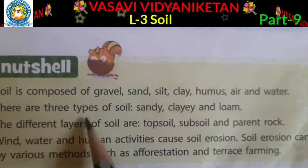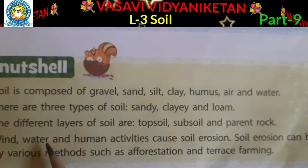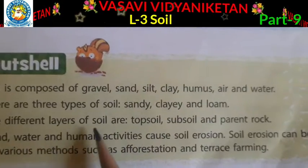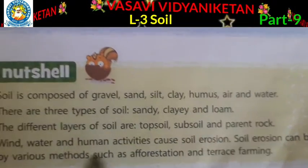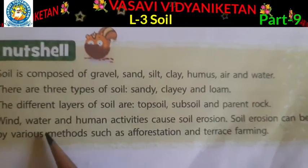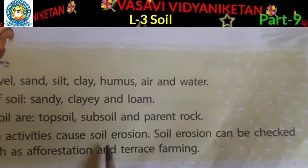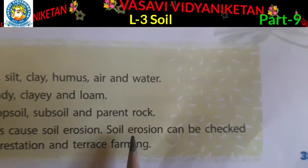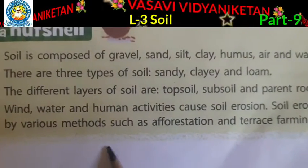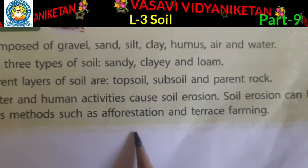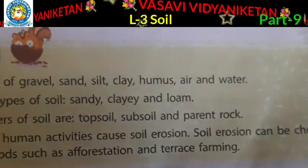There are three types of soil: sandy, clay and loam. The different layers of soil are topsoil, subsoil and parent rock. Wind, water and human activities cause soil erosion. Soil erosion can be checked by various methods such as afforestation and terrace farming.